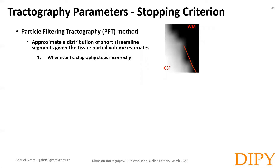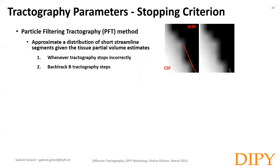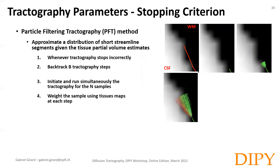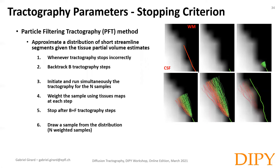Whenever tractography stops incorrectly — for instance, the red streamline here — it backtracks a few tractography steps, for instance a few millimeters, to where the tractography was still propagating correctly in the white matter. It then initiates and runs simultaneously the tractography for n sample trajectories, weighting them using the tissue map at each step, penalizing trajectories going into voxels containing CSF. It stops after a few more tractography steps, and finally draws a sample from the weighted distribution and selects that segment to replace the one that was ending in the CSF. It then restarts the tractography normally in the white matter.